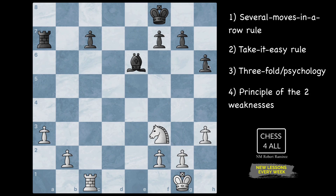Hello students! In this lesson, we're going to go over one of Capablanca's famous endgames. Even though this position seems very ordinary and very simple, it became really important because of the way that Capablanca annotated it. He introduced a new way to think about endgames, and this rule that he introduced is called the several moves in a row rule. It's something very simple, like many of the things that Capablanca did, but they make a huge difference in your game.